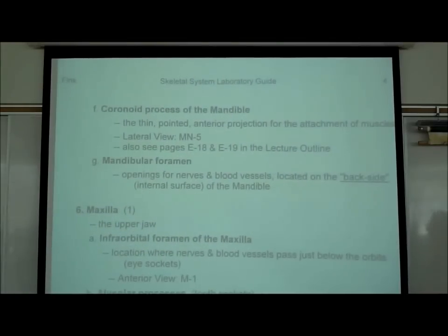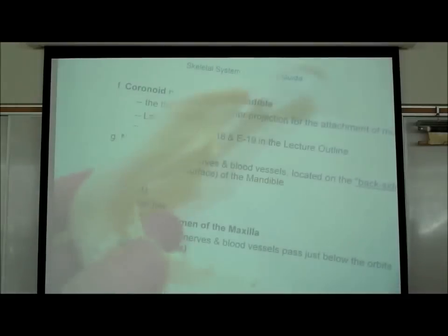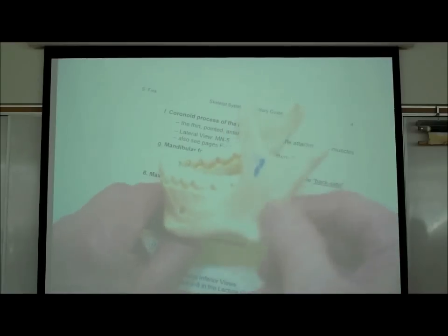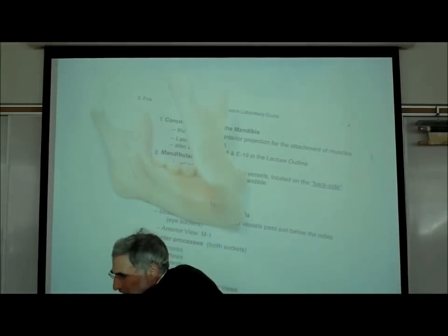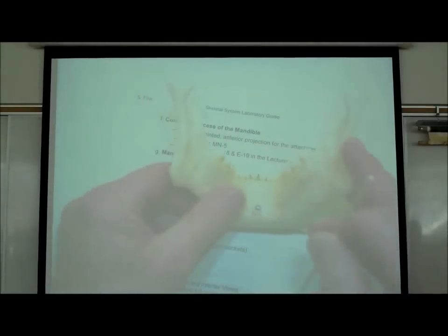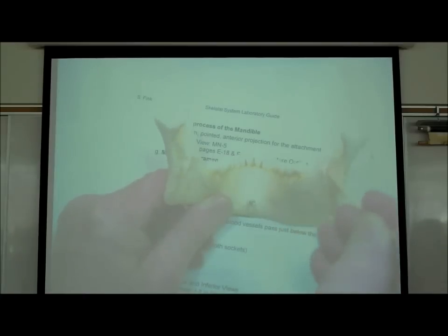On page four, the mandibular foramen. Removing the mandible and looking at the back side, there is a hole on each side called the mandibular foramen. The purpose of this foramen is for blood vessels and nerves to pass through.